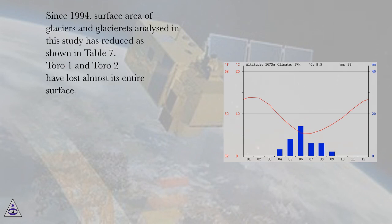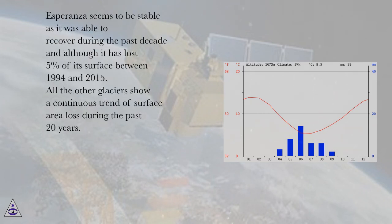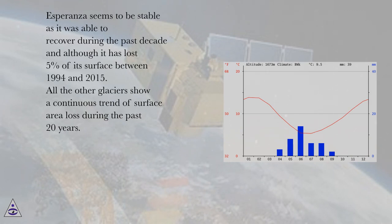Since 1994, the surface area of glaciers and glacier rays analyzed in this study has reduced, as shown in Table 7. Toro 1 and Toro 2 have lost almost their entire surface. Esperanza seems to be stable, as it was able to recover during the past decade, although it has lost 5% of its surface between 1994 and 2015. All other glaciers show a continuous trend of surface area loss during the past 20 years.